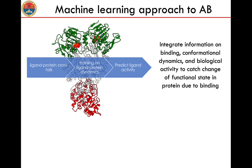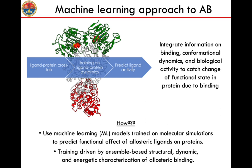In order to develop an approach to predict allosteric binding, one should integrate information not only on the binding event itself but also on the conformational dynamics of the system after binding to the allosteric site, and how this reflects on the biological activity — in particular, the change in the functional state of the protein. The authors propose to use machine learning models trained on molecular simulation data to predict the functional effect of allosteric binding. Specifically, they propose to use docking data and data from molecular dynamics simulations to train a machine learning classifier to distinguish between activators and inhibitors of the protein.